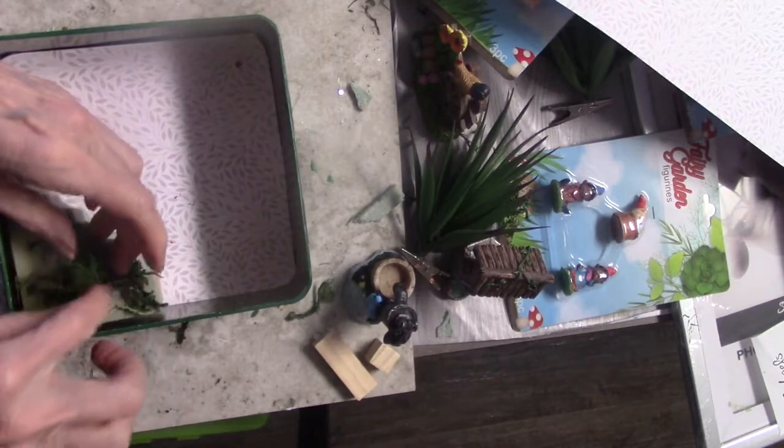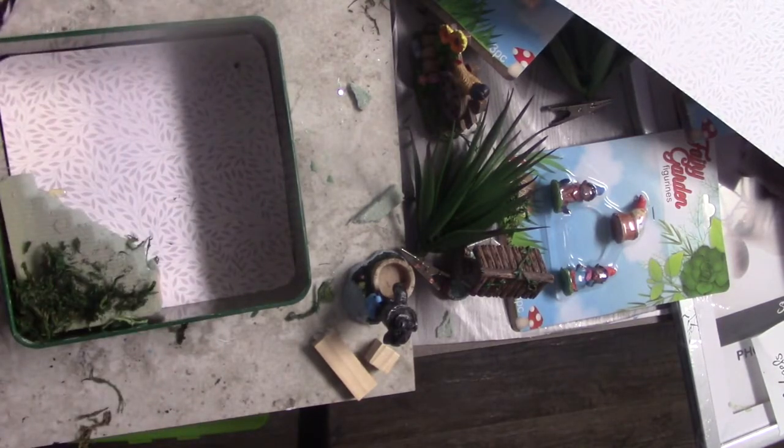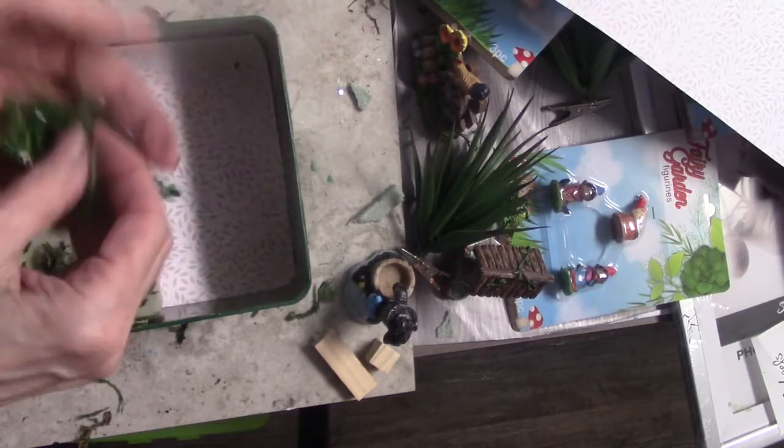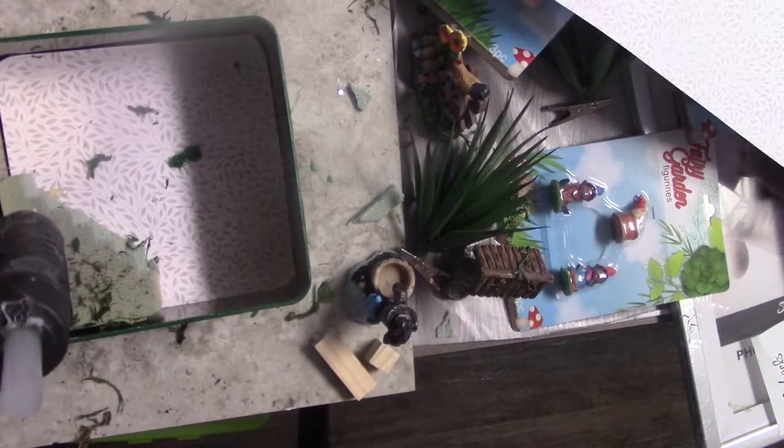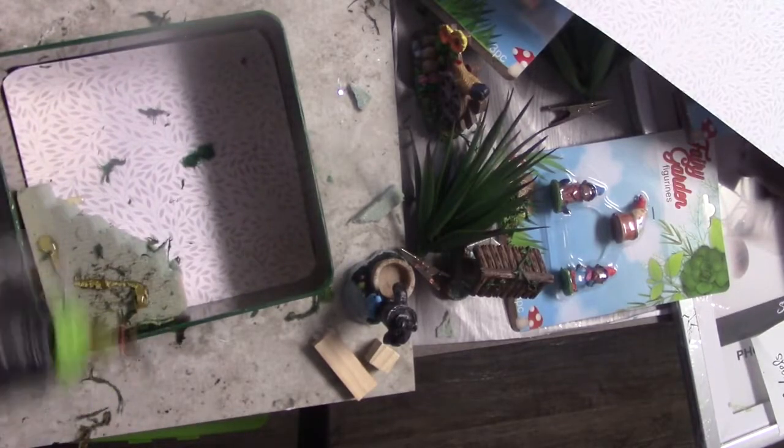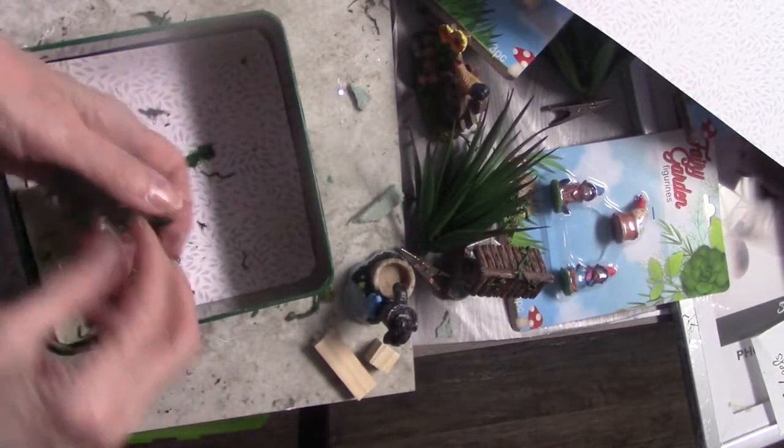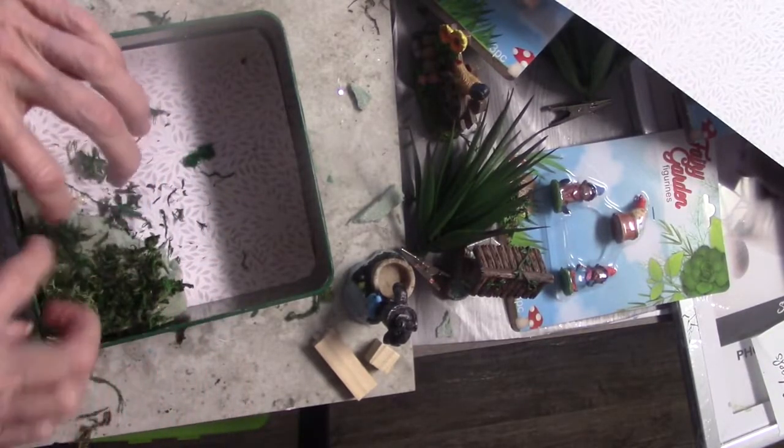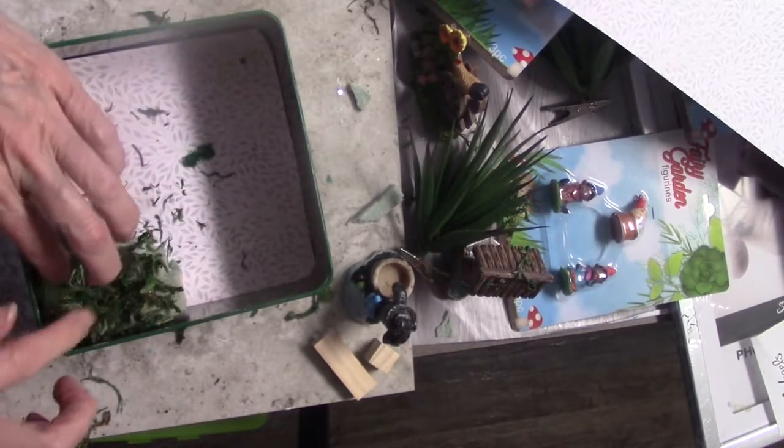I'm going to put some moss just to cover it a little bit over the floral foam. And as you can see, I have the fairy garden figurines, which are going to go inside this box. That came from the Dollar Tree. Actually, everything came from the Dollar Tree except for the scrapbook paper. And that came from Hobby Lobby.